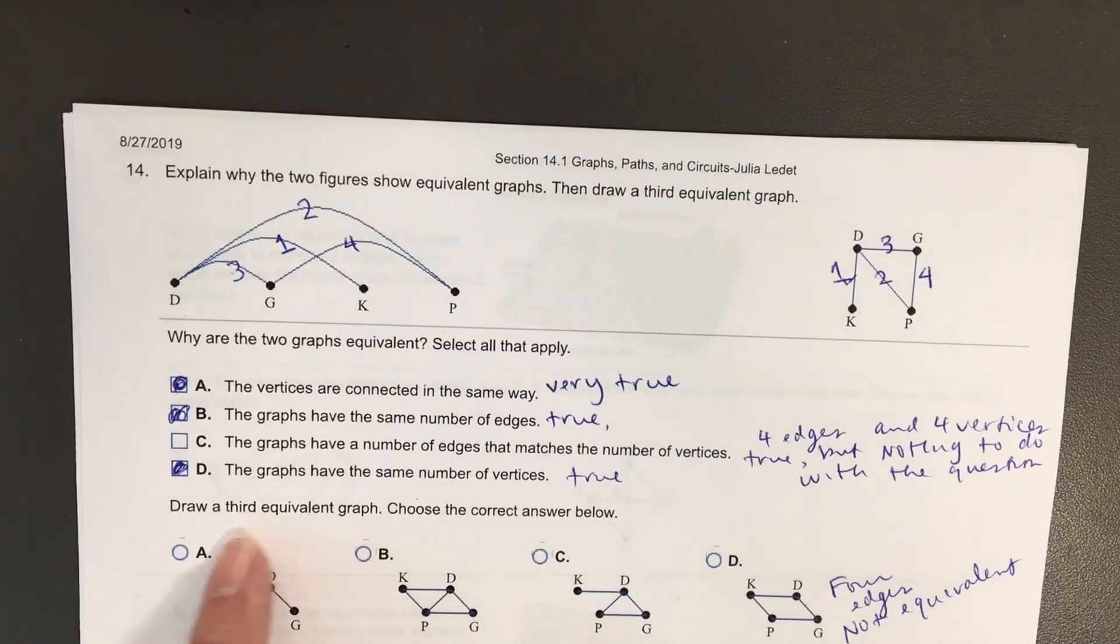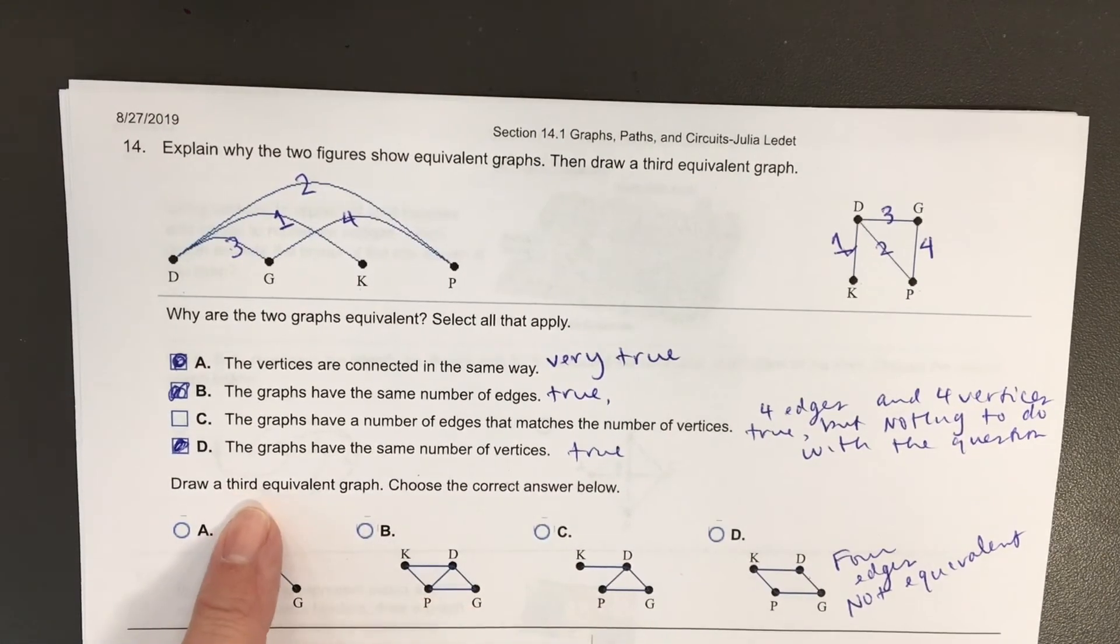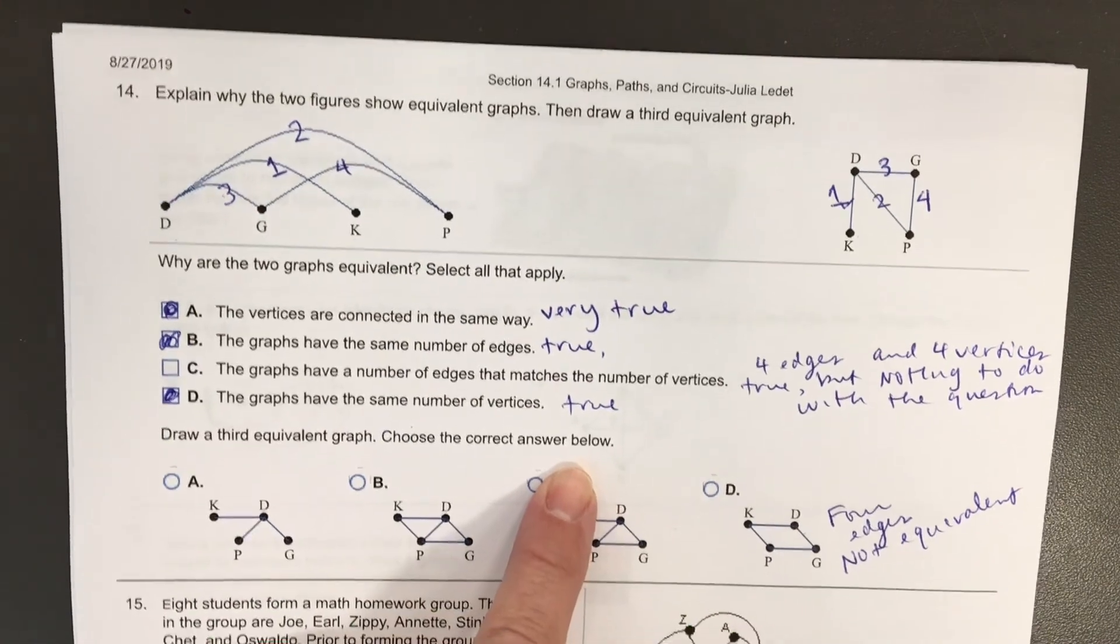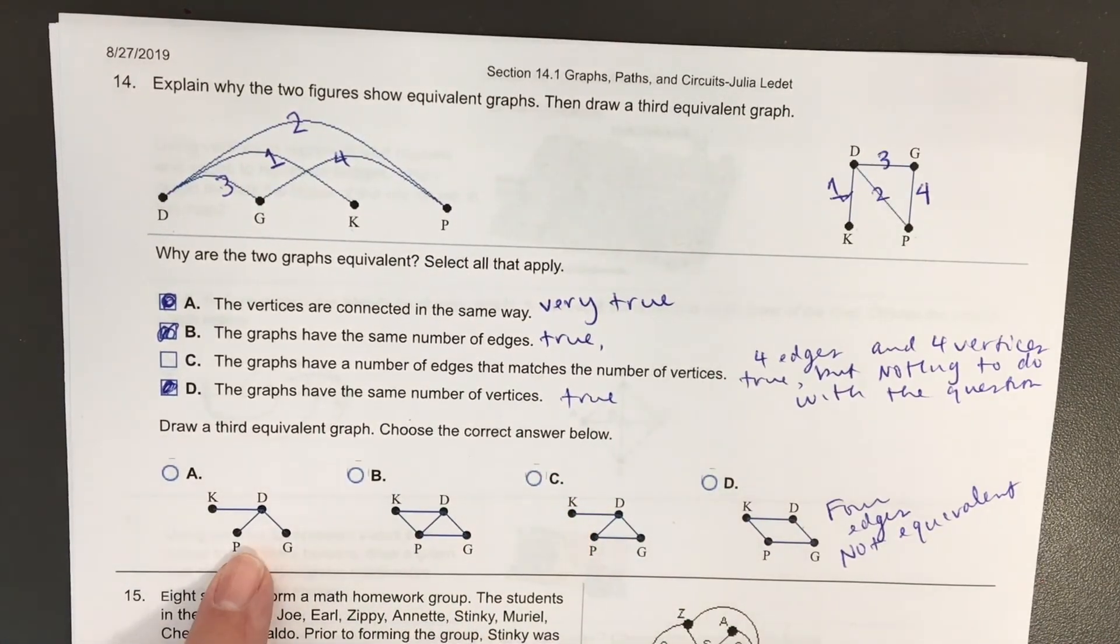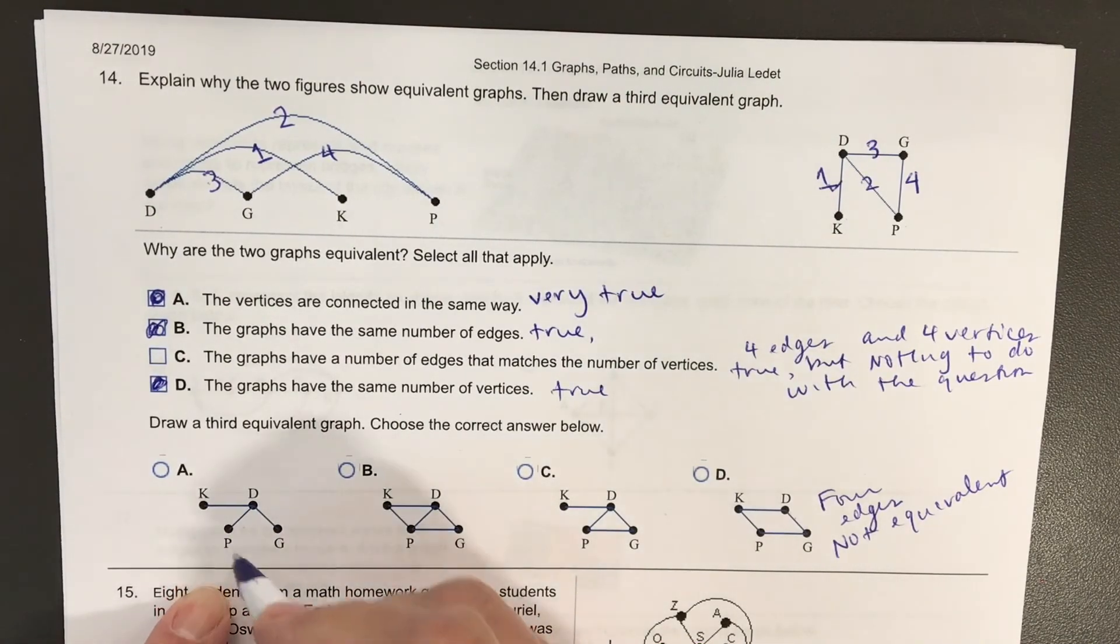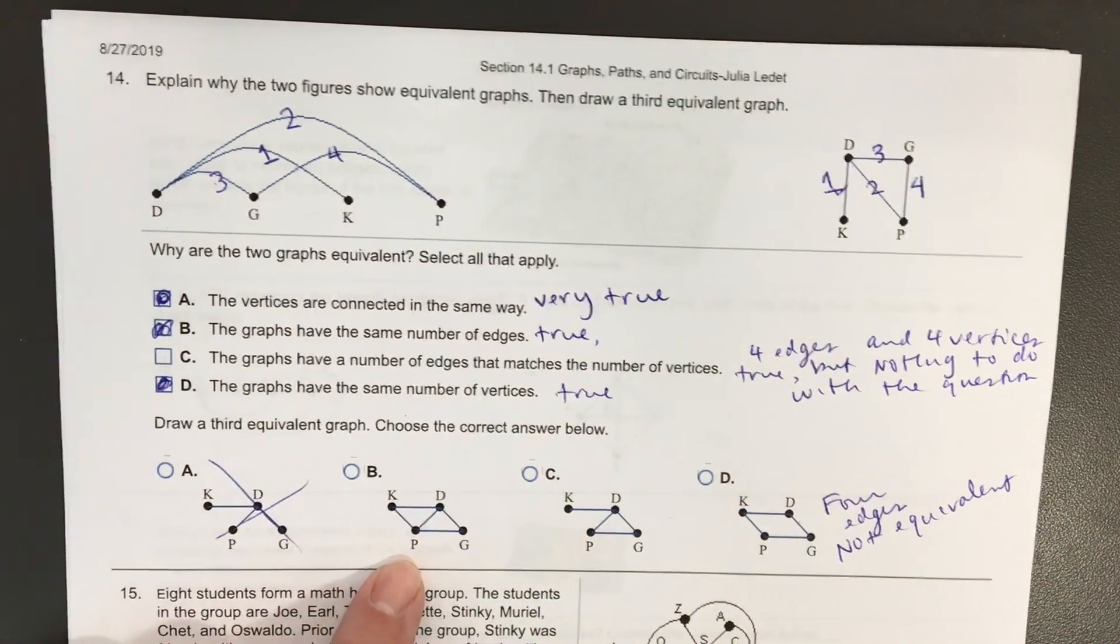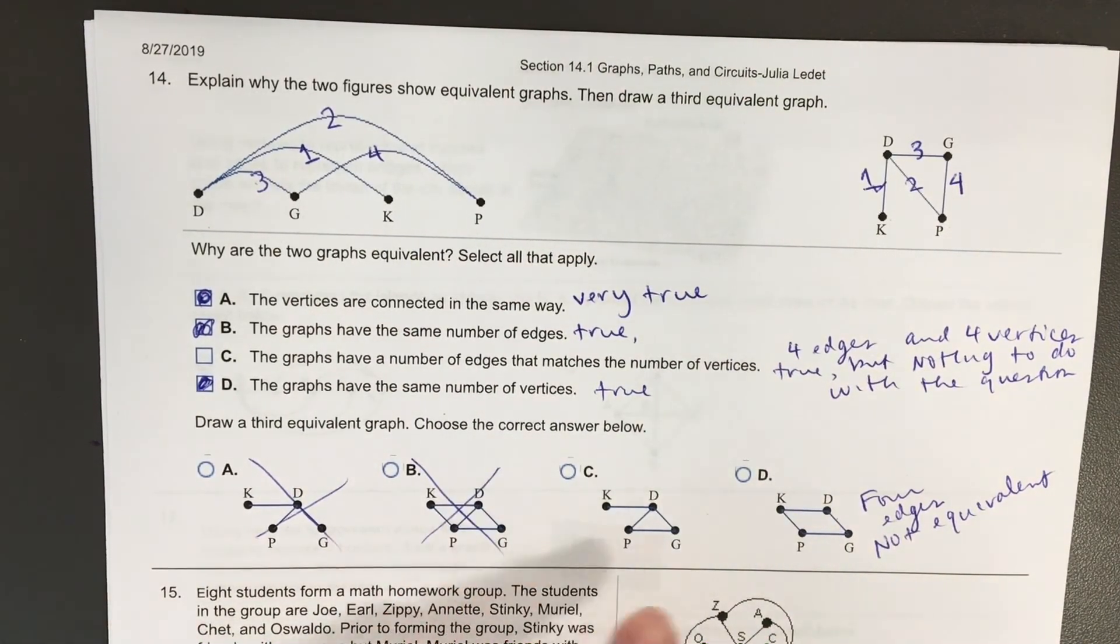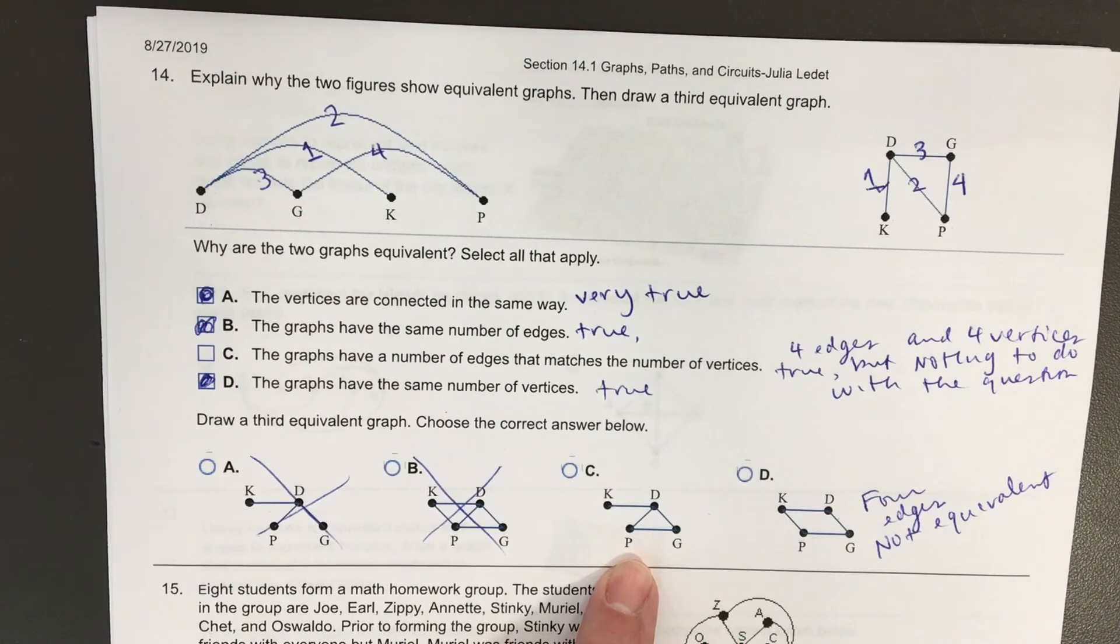Let's look at the last part of this one. Draw a third equivalent graph. Choose the correct answer below. So, well, A only has three edges, so we count that one out. B has five edges. C has four edges.